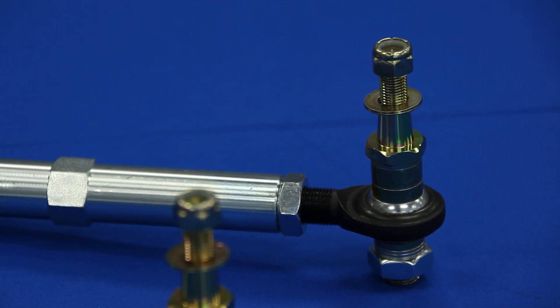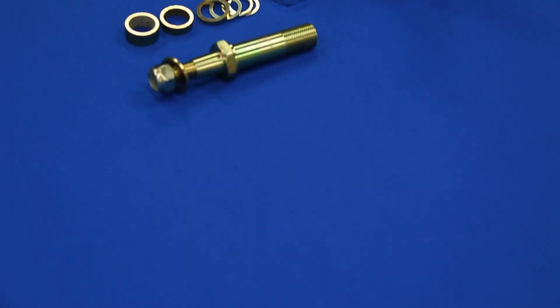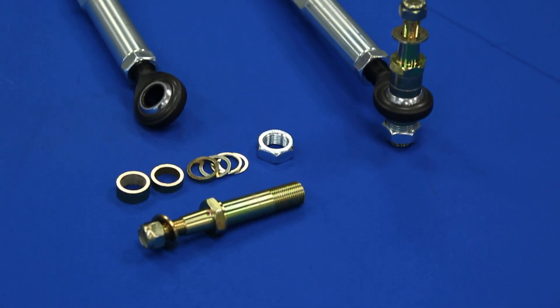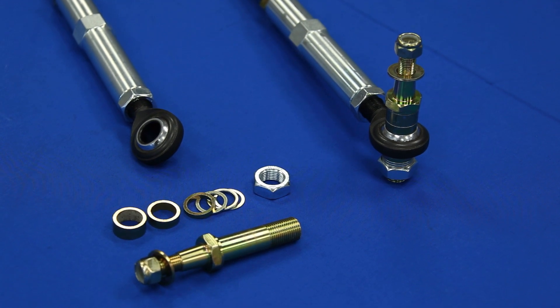This is a huge improvement over the competitors' low-grade mild steel rod ends. The tapered stud, along with a selection of shims, enables vertical adjustment of the outer pivot point at the steering arm.